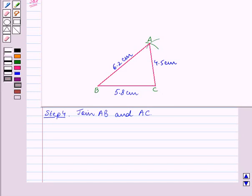Thus we have constructed the triangle ABC in which AB is equal to 6.2 cm, BC is equal to 5.8 cm and AC is equal to 4.5 cm. Therefore, triangle ABC is the required triangle.